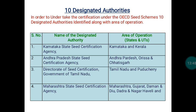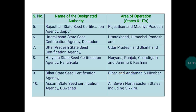The Director of Seed Certification, Government of Tamil Nadu, is responsible for OECD scheme certification in Tamil Nadu and Puducherry. Maharashtra State Certification Agency covers Maharashtra, Gujarat, Daman and Diu, Dadra and Nagar Haveli. Rajasthan State Certification Agency covers Rajasthan and Madhya Pradesh. Uttarakhand State Certification Agency covers Uttarakhand. Haryana State Certification Agency covers Haryana, Punjab, Chandigarh, and Jammu & Kashmir. Bihar State Certification Agency covers Bihar and Andaman & Nicobar Islands. Assam State Certification Agency covers all seven northeastern states including Sikkim.